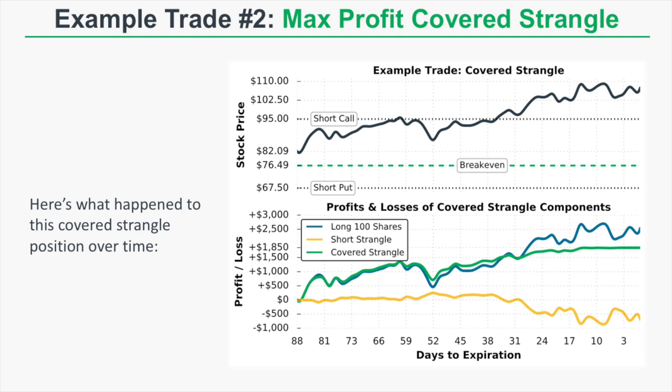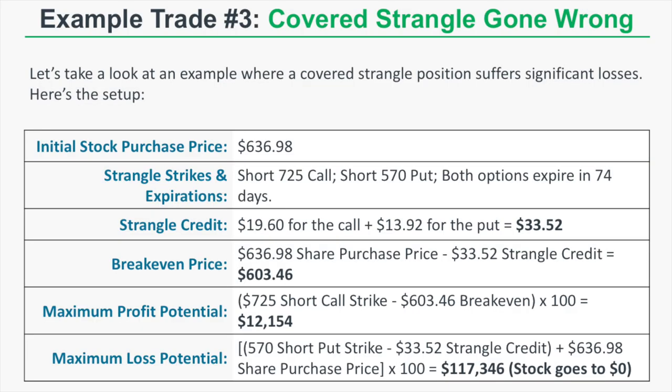However, the profit on the long shares alone is actually greater than the covered strangle profit, since long shares have no limit to upside potential. This illustrates how a covered strangle is profitable but less profitable than simply owning shares when the stock rises significantly past the short call strike.